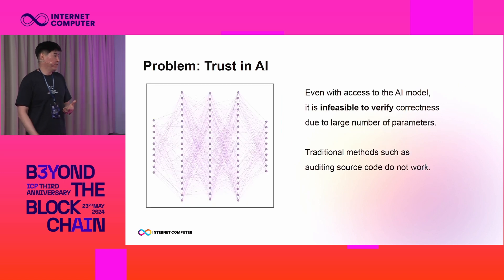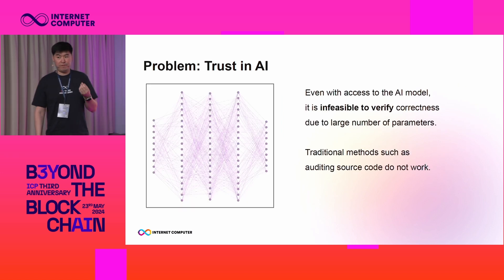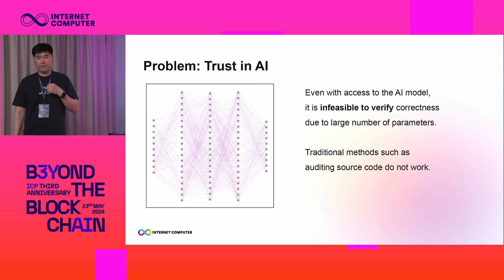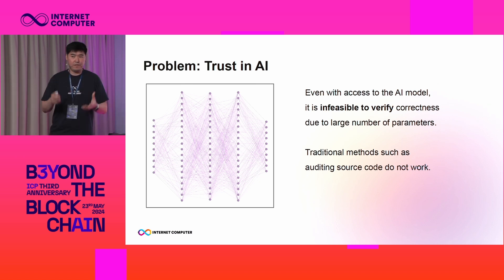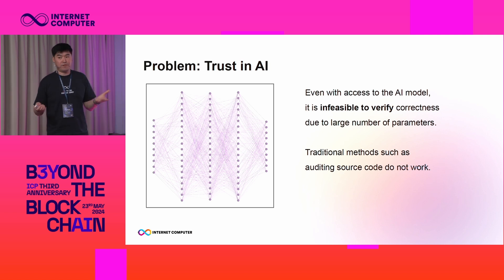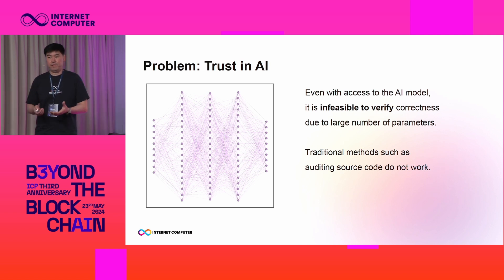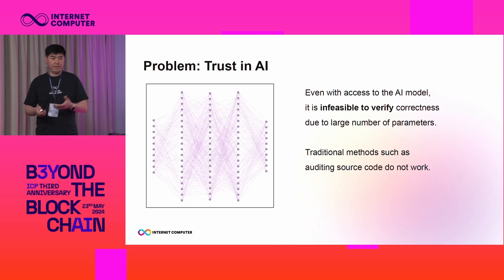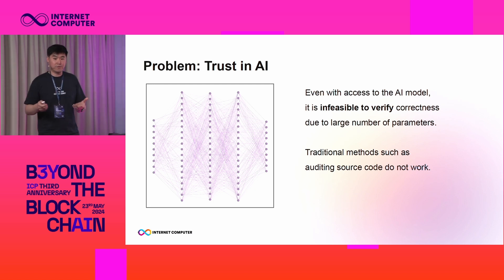And to make this problem of trust even worse, AI is very much different from traditional software. Because even if users have full access to the underlying model, it's infeasible to verify that the model is correct. That's because the model has a huge number of parameters, and the traditional methods of reviewing code do not work here.